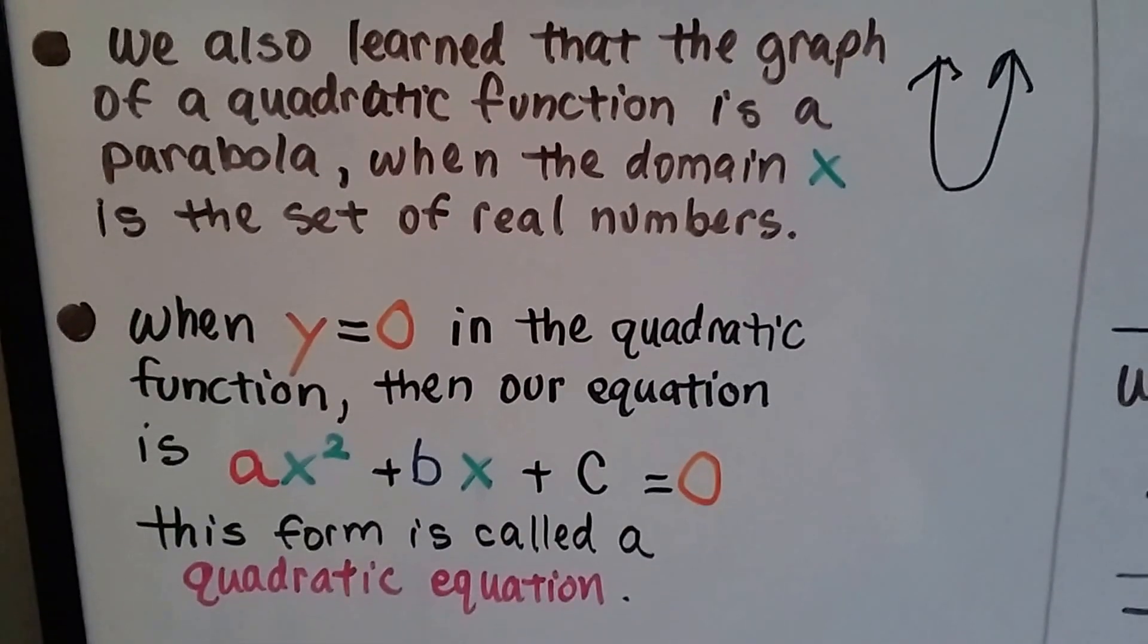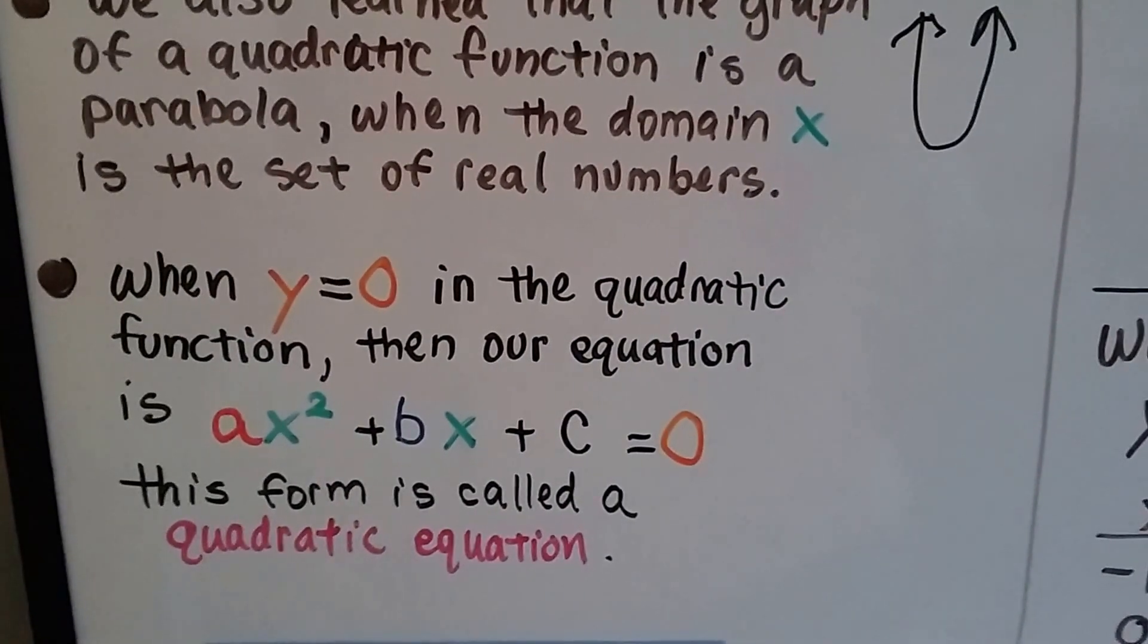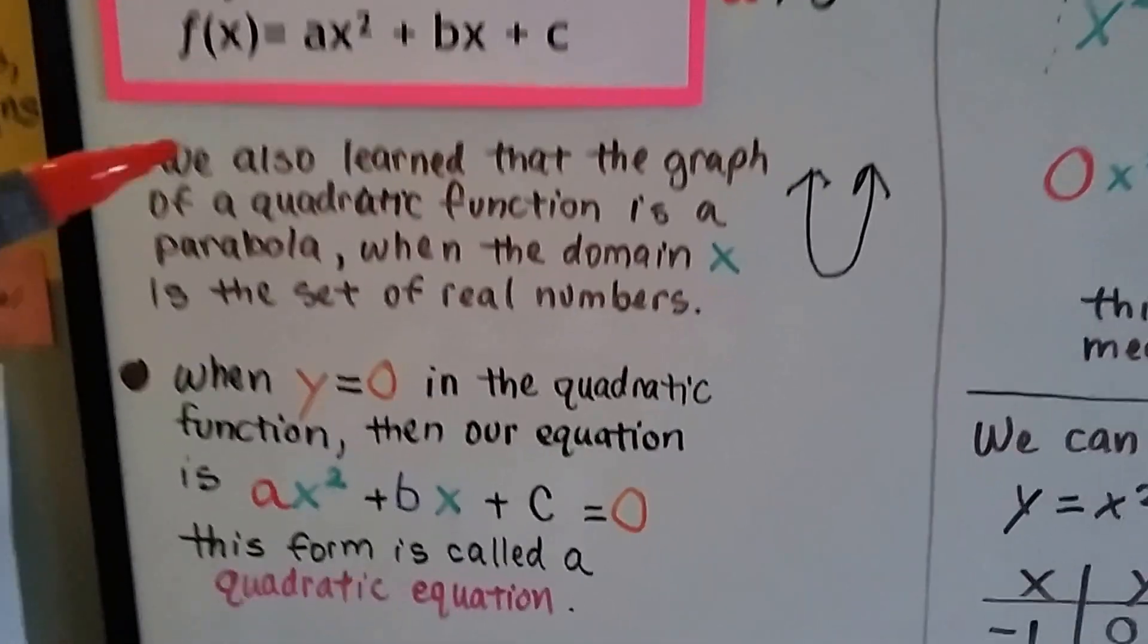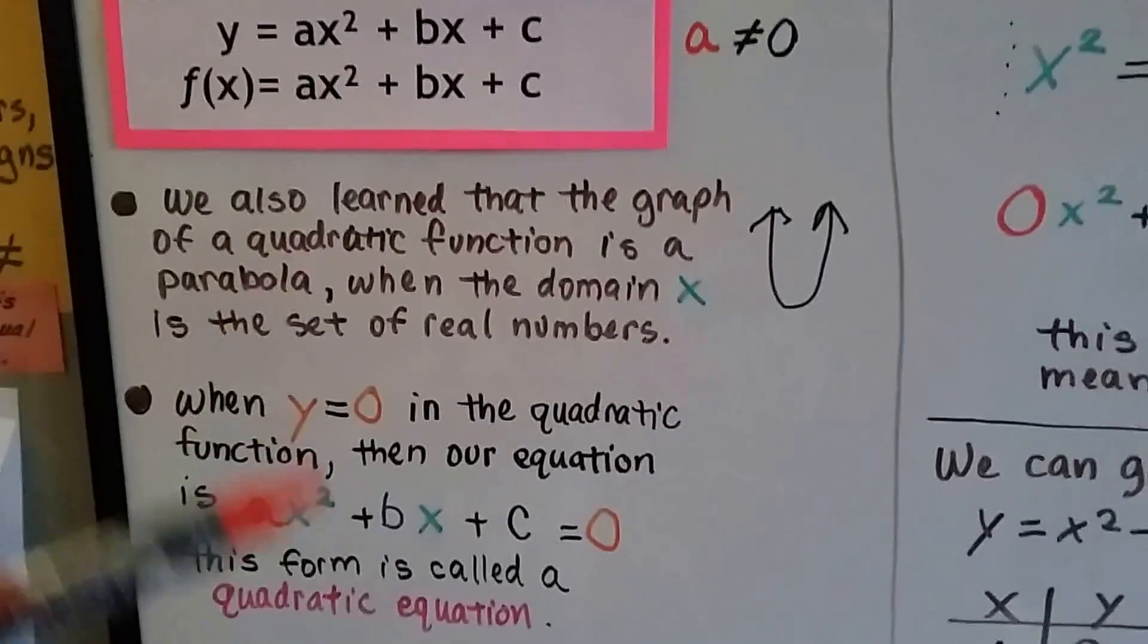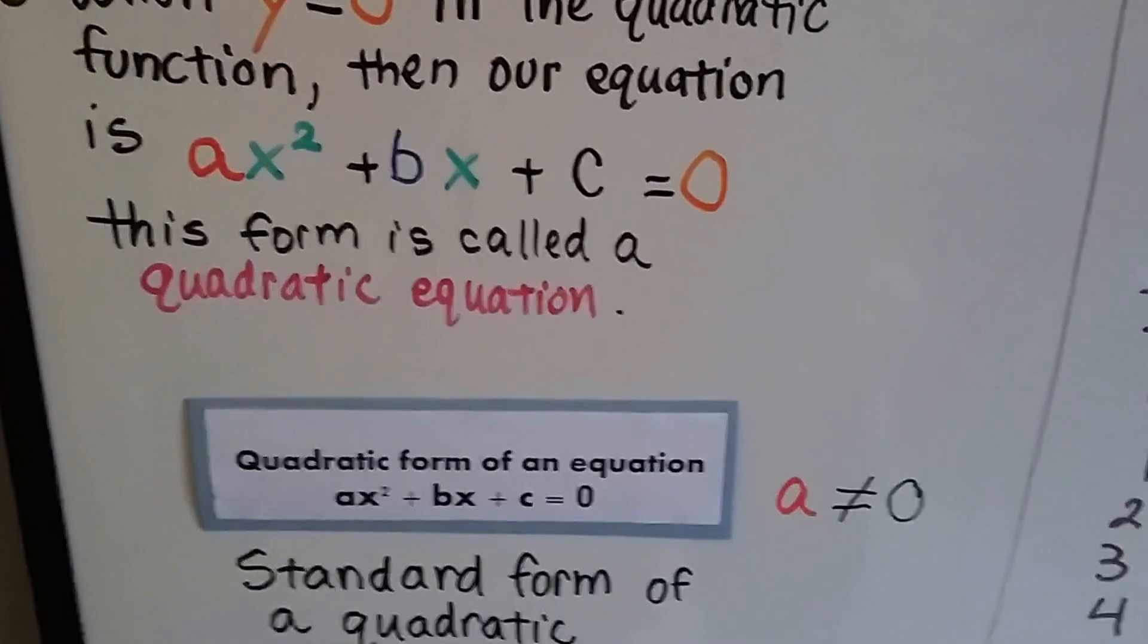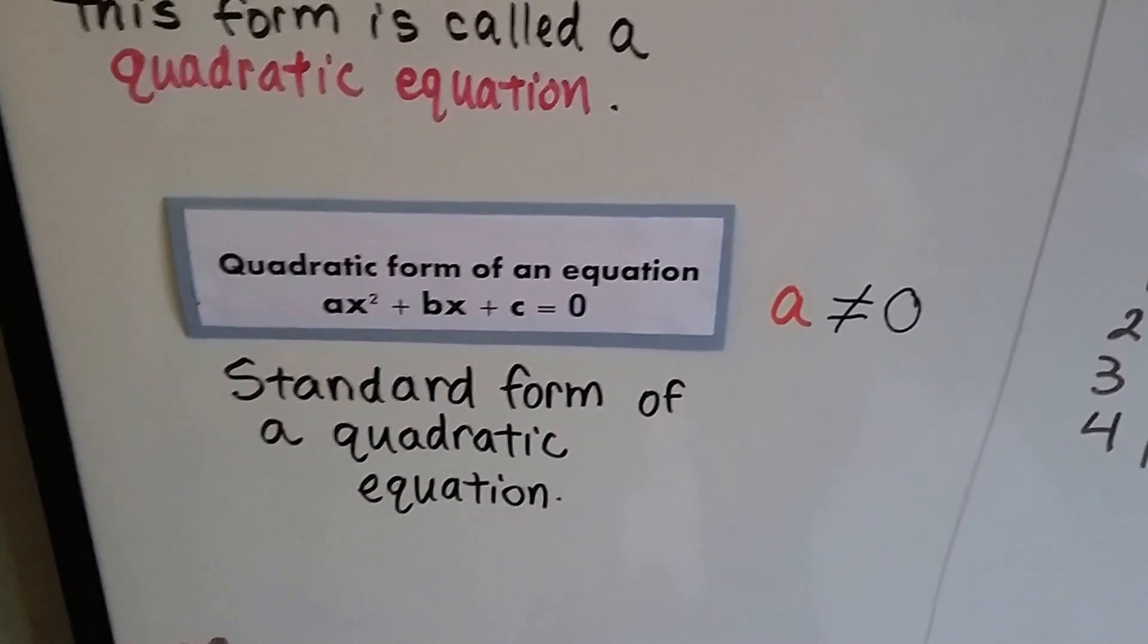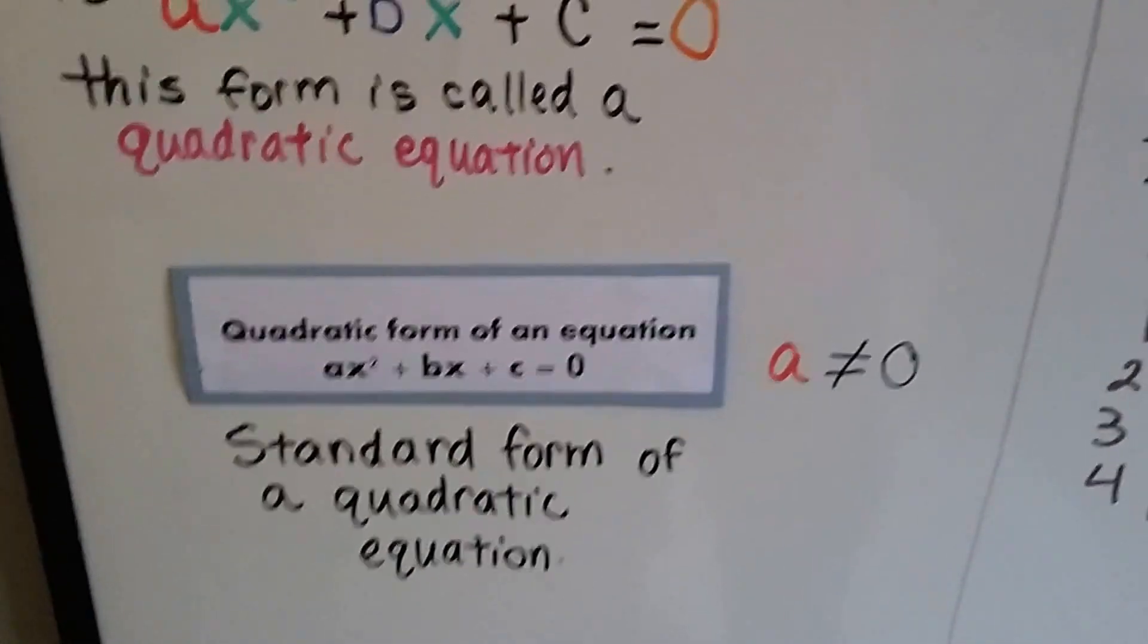When y equals zero in the quadratic function, then our equation is ax squared plus bx plus c equals zero. So instead of equaling y like this, you're going to see the equation written equaling zero. And this form is called the quadratic equation. It's the standard form of a quadratic equation. Remember that a can't equal zero.